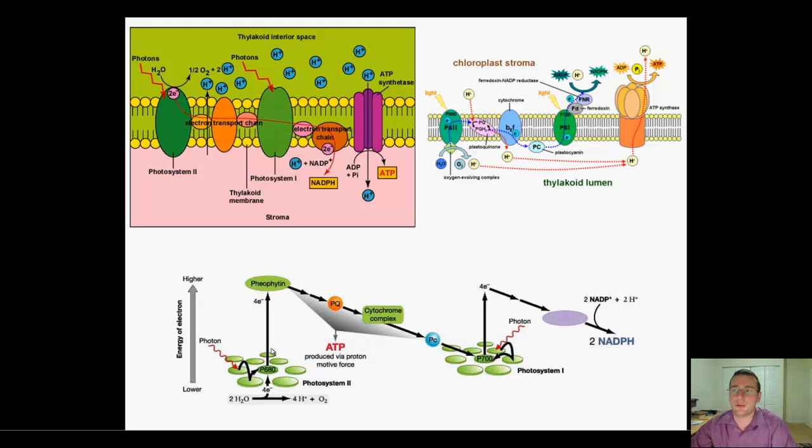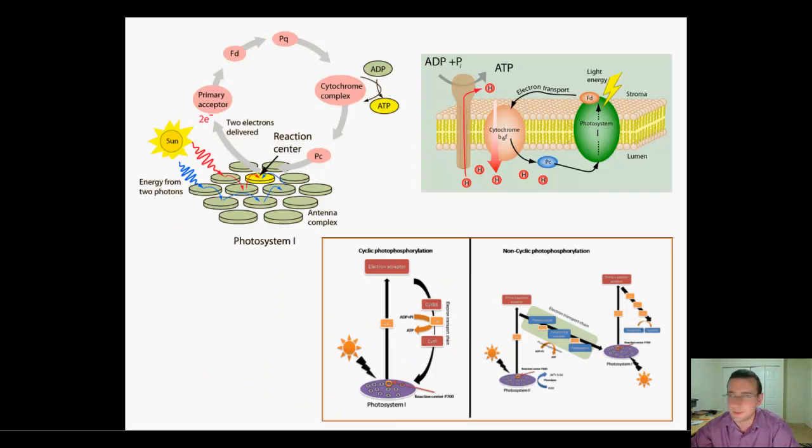But there is another version called cyclic photosynthesis. In cyclic photosynthesis, instead of using photosystem 2 as a starting point, light hits photosystem 1. This happens at the same time as non-cyclic. Light hits photosystem 1 and the pigments capture the light and send it to each other,